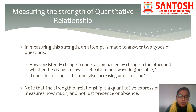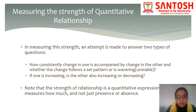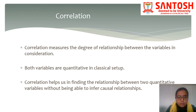In this type of phenomena, you observe two variables and make a decision about which variable to consider as dependent and which as independent. The dependent variable shows the pattern in response to the independent variable. Note that the strength of relationship is a quantitative expression that measures how much — not just presence or absence. Correlation and regression give us a measure of how strong the relationship is between two variables.